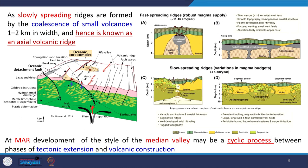Slowly spreading ridges are formed by collisions of small volcanoes 1 to 2 km wide, hence called axial volcanic ridges. Comparing fast and slow spreading systems: the fast spreading ridge has a magma chamber below with continuous magma supply erupting in a narrow zone, while the slow spreading ridge has magma supplied through numerous normal faults with magmatic eruption expressed over a wide zone rather than confined to a narrow zone.